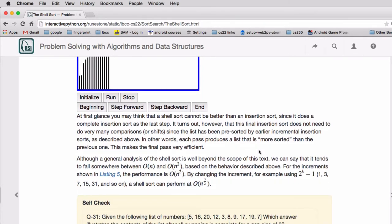Now the analysis is beyond this book, but it's somewhere between O of n and O of n squared. If you choose the right increment reduction, if you go 1, 3, 7, 15, 31, which is powers of 10 minus 1, you actually get exactly O of n to the 3 halves.